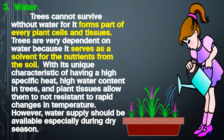3. Water. Trees cannot survive without water, for it forms part of every plant cell and tissue. Trees are very dependent on water because it serves as a solvent for nutrients from the soil. With its unique characteristic of high specific heat, high water content in trees and plant tissues allows them to resist rapid changes in temperature. Water supply should be available especially during the dry season.